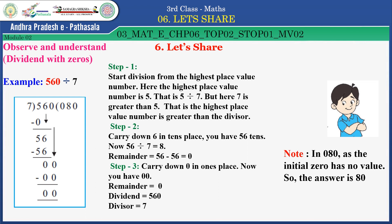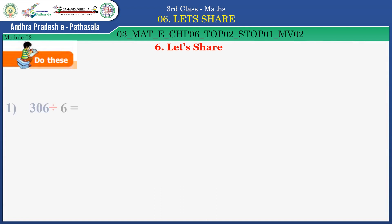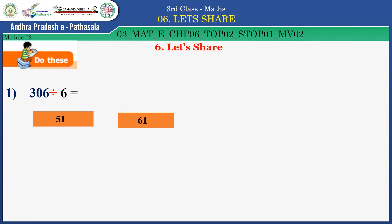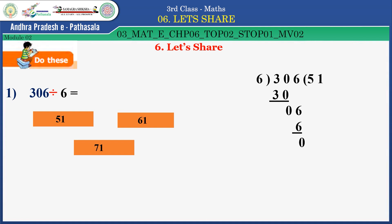Now I will ask you a question — try to answer it. Children, look at this division: 306 divided by 6. You do this division and tell the correct answer. How much did you get — 51, 61, or 71? Yes, 51 is the right answer. Very good, children.